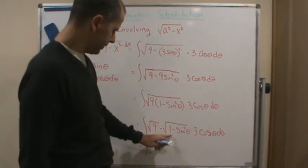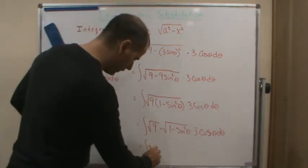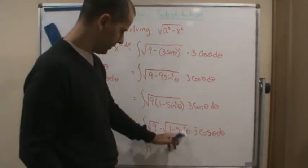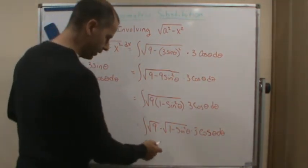Now, what is this? This gives me... Well, if I use the identity, right, the Pythagorean identity, this is just cosine squared theta.